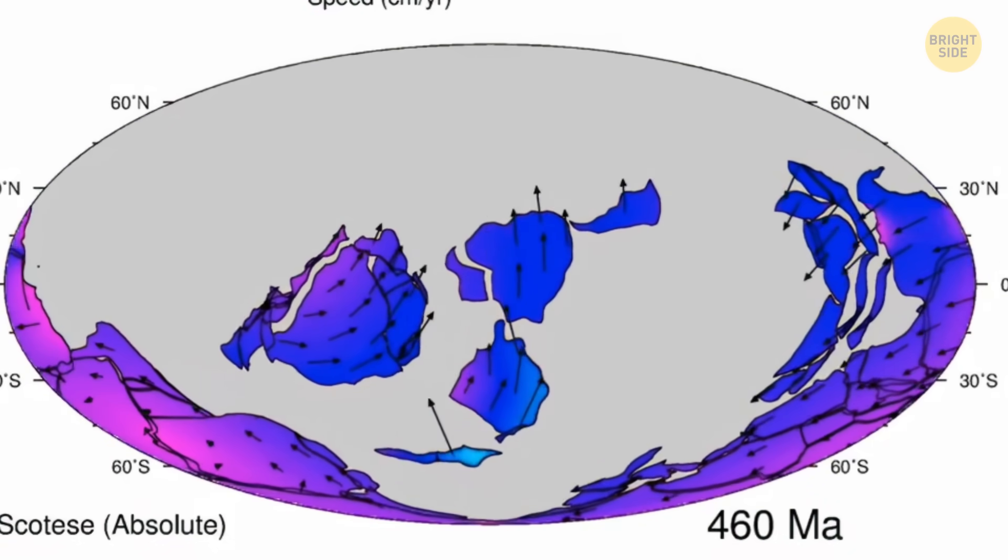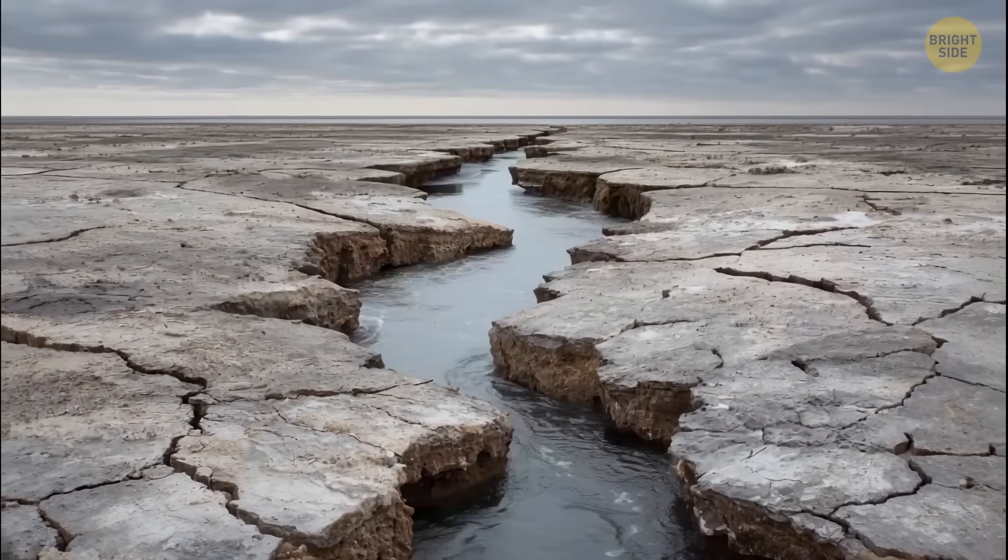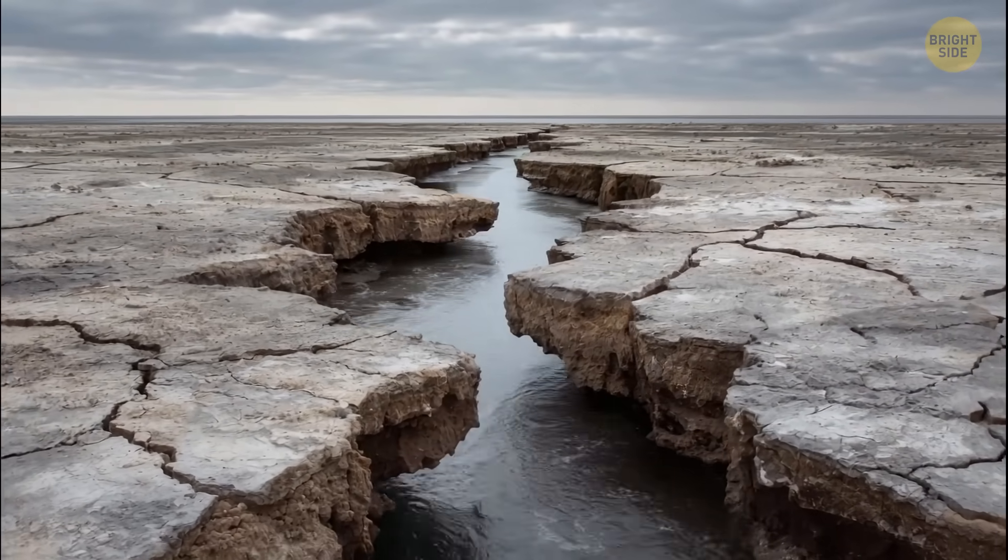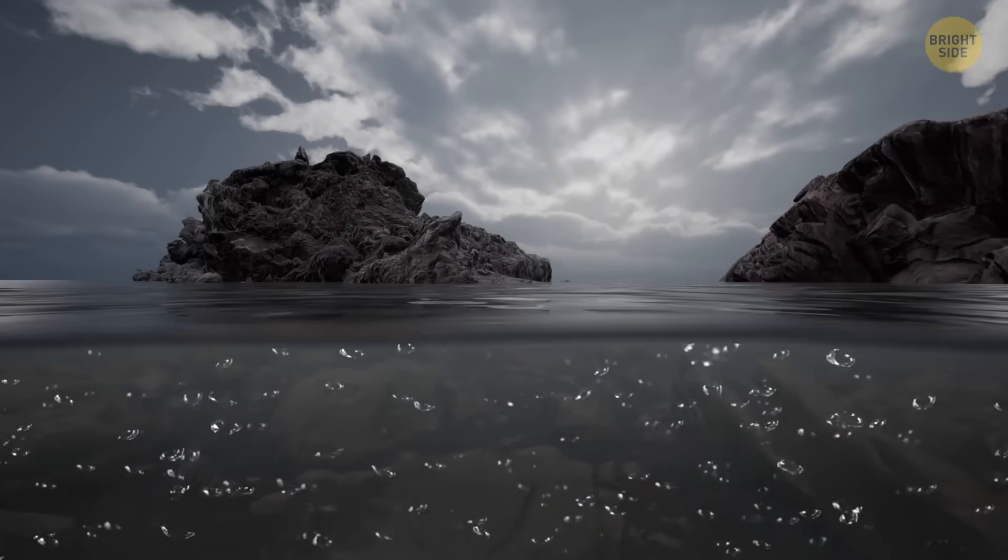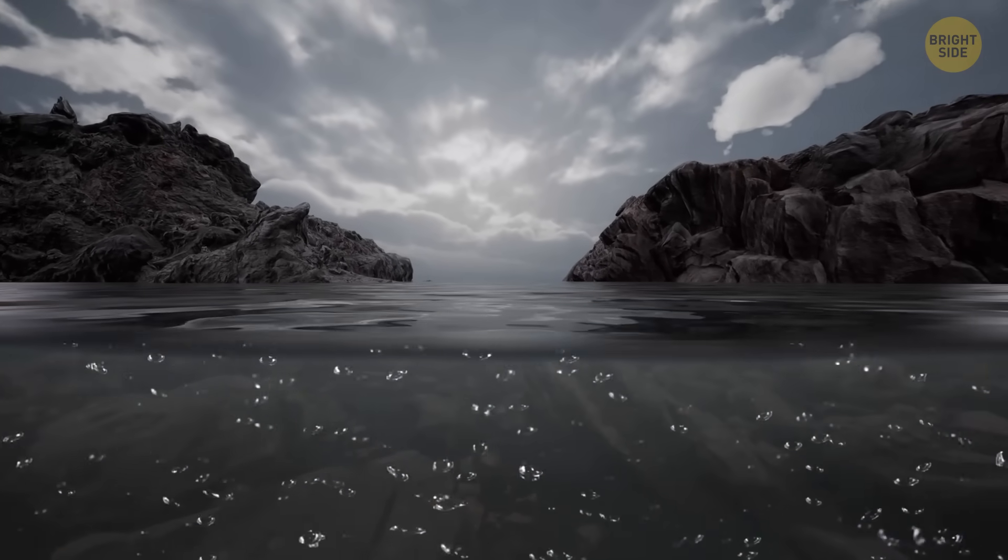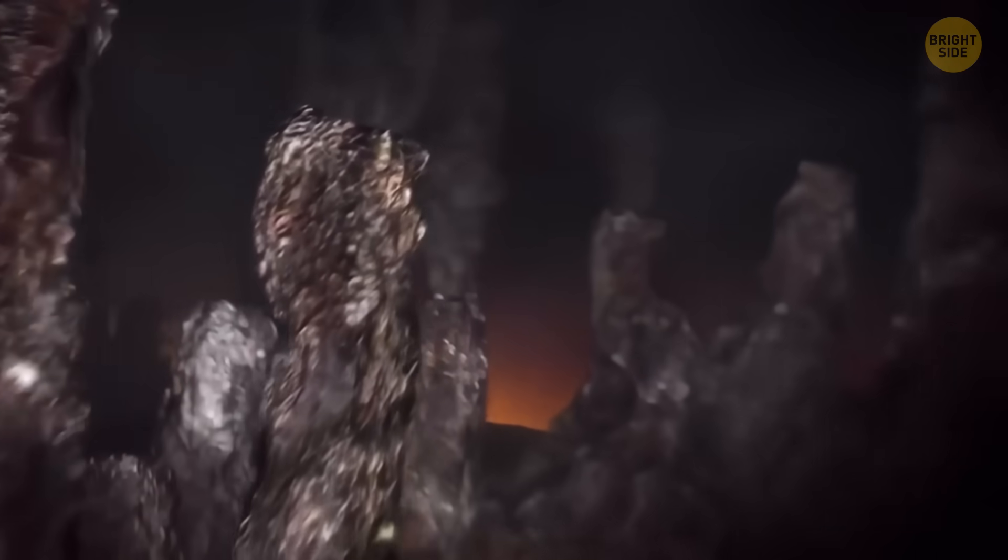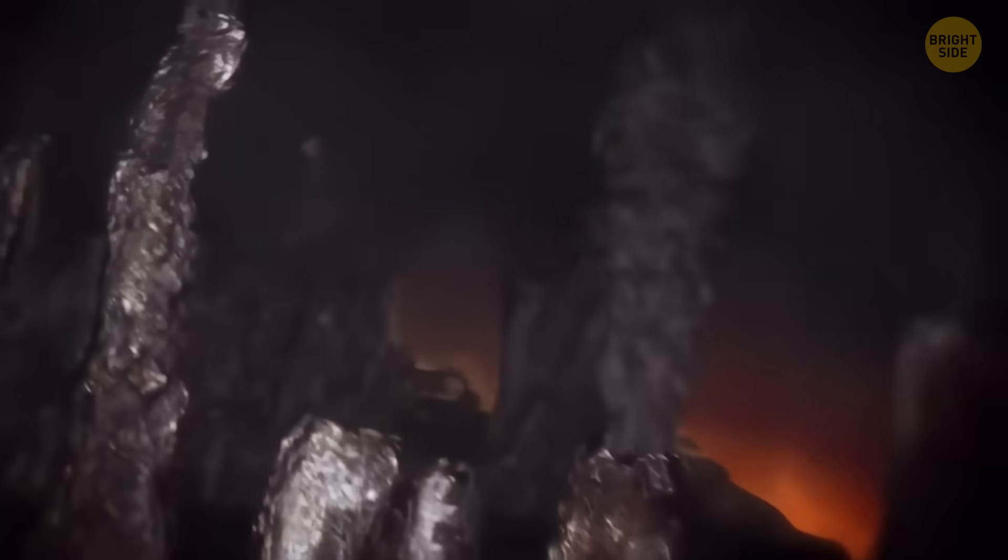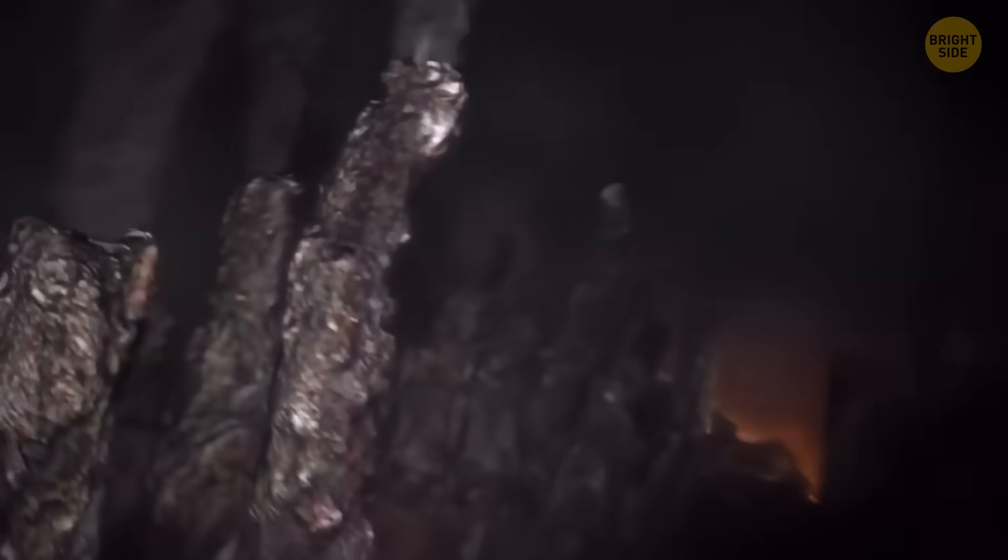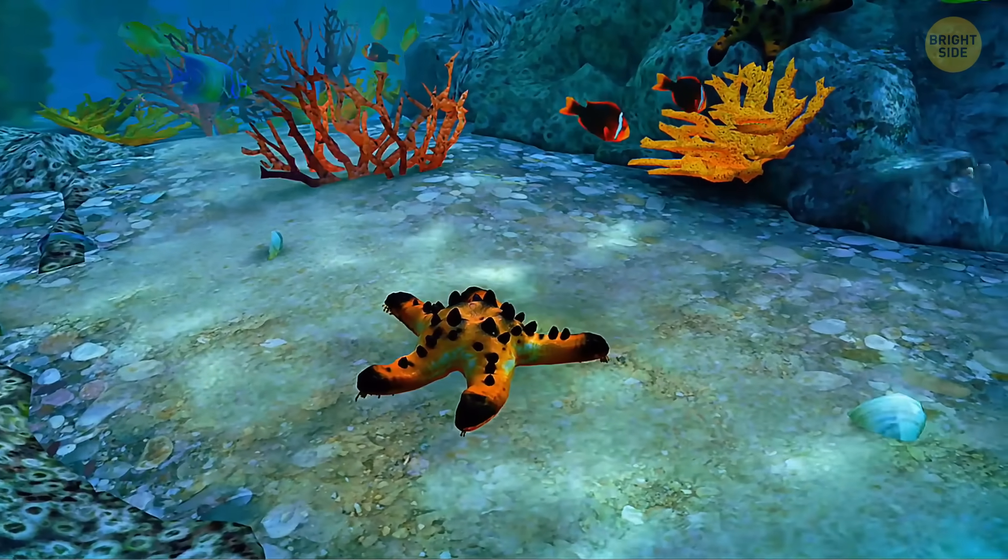When Nuna began to break apart, huge cracks opened between the drifting land pieces. Water filled those spaces, creating shallow seas. Those seas were warmer, calmer, and had more oxygen than the deep oceans that existed before. That might have changed everything. The new seas created friendlier conditions for life to grow and change. Scientists now think they may have helped early life become more complex.